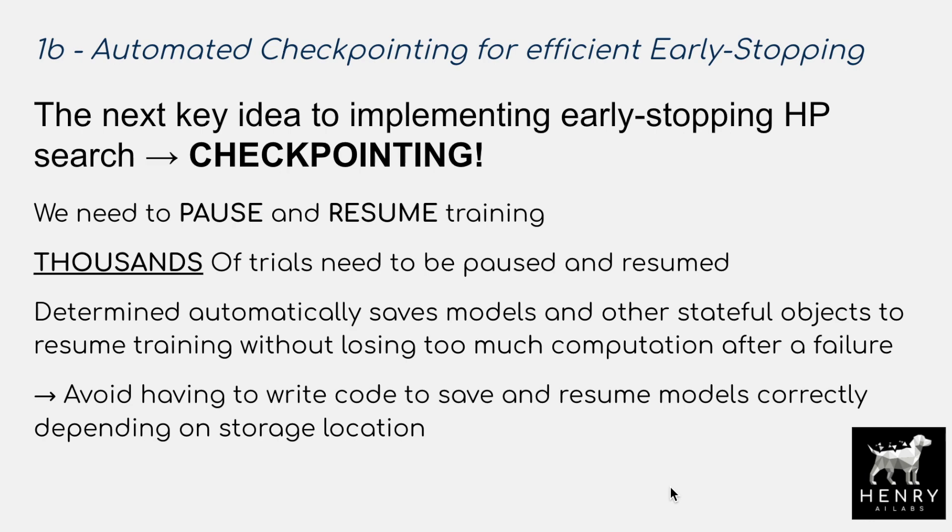The next core point is automated checkpointing for efficient early stopping. We've seen the benefit of early stopping, but now we have to implement this checkpointing — and Determined implements this under the hood so we don't need to change our code. We're trying to pause and resume training with thousands of trials. We need to resume the training with the optimizer state, the same batch of data that's been loaded, and the model parameters as well. Determined automatically saves these models and other stateful objects like data batching and optimizer parameters.